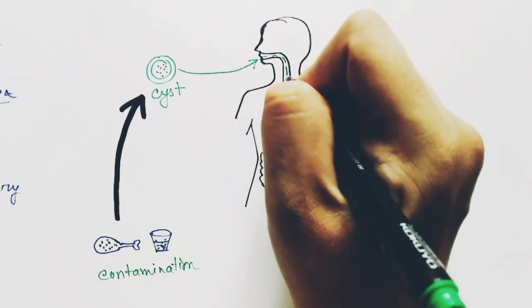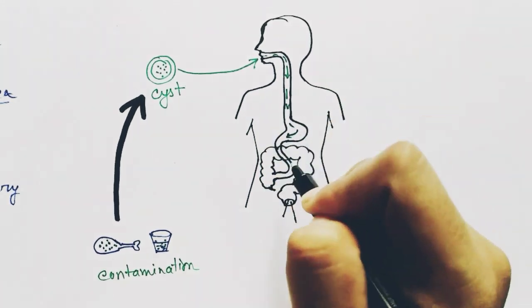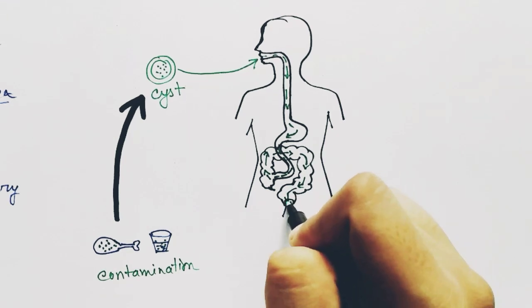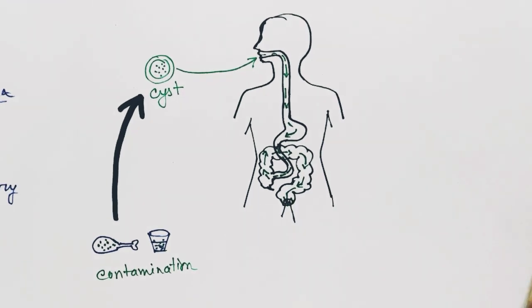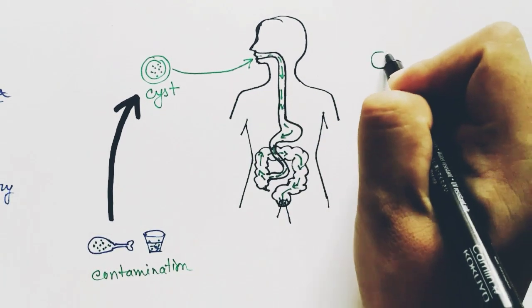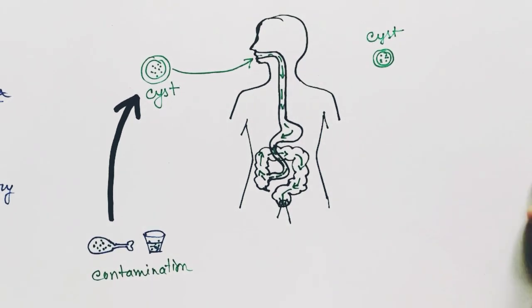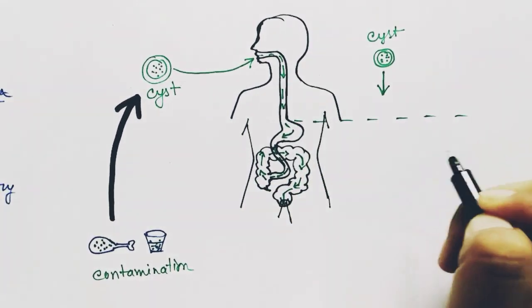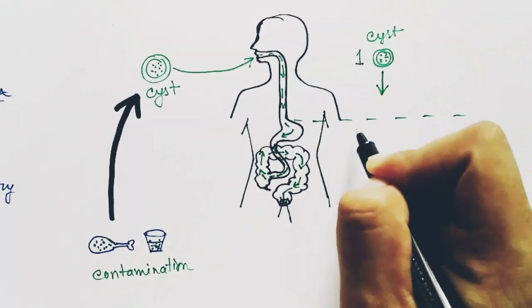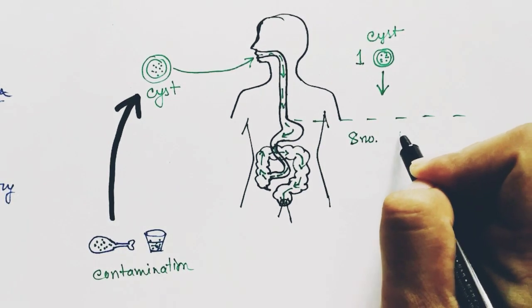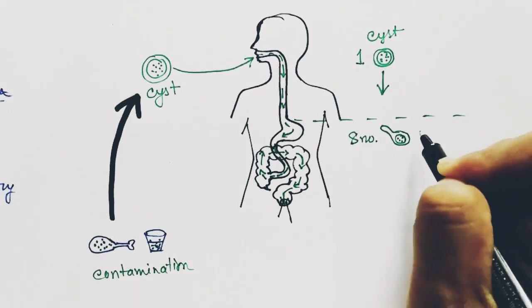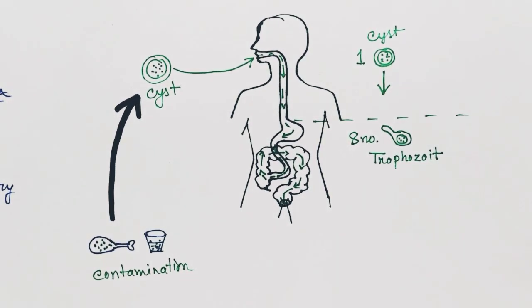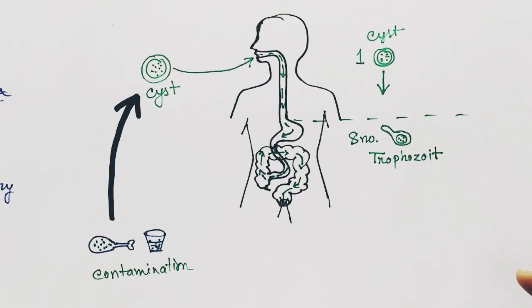When it enters the mouth it is the cyst, but when the cyst crosses the stomach, one cyst gives rise to eight trophozoites. Trophozoites are the mobile form of Entamoeba histolytica.